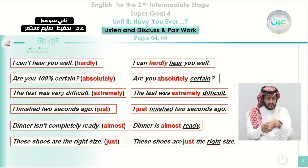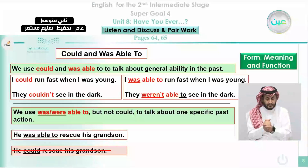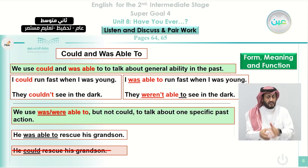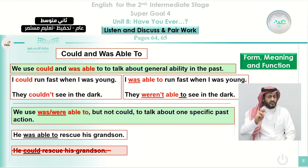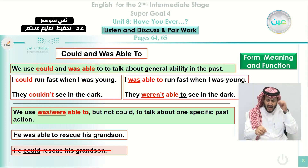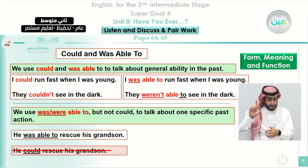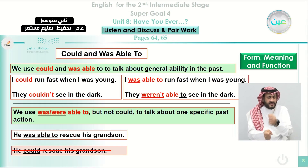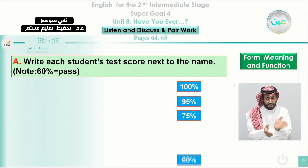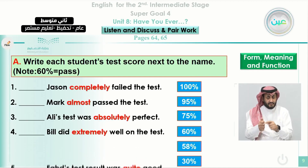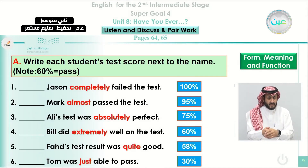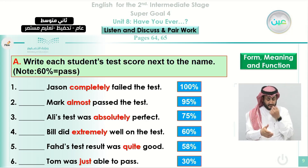We also talked about 'could' and 'was able to.' We told you that when we use 'could' and 'was able to,' we are talking about something in the past. We use 'could' to talk about ability in the past. But when we use 'able to,' we talk about a specific past action. We also looked at examples using completely, almost, absolutely, extremely, quiet, and just.